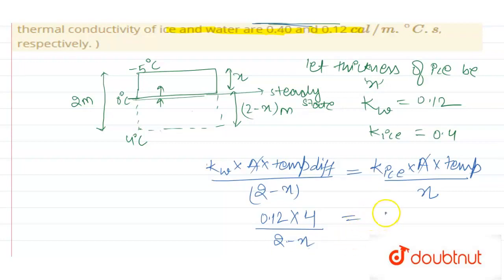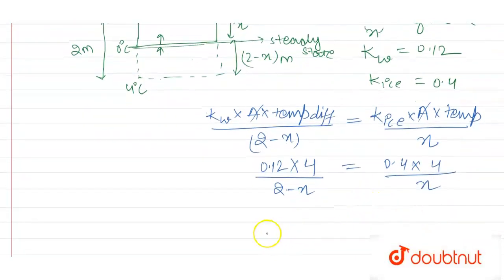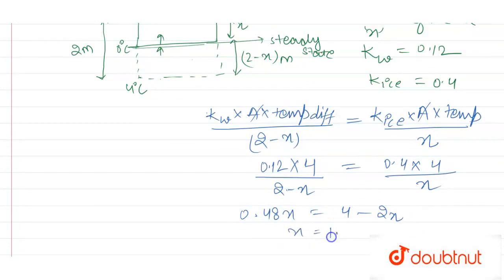This equals 0.4 times 4 divided by x. When we cross multiply, we get 0.48x equals 4 minus 2x, so x equals 1.61 meters. This is what we were asked - the thickness of the ice is 1.61 meters.